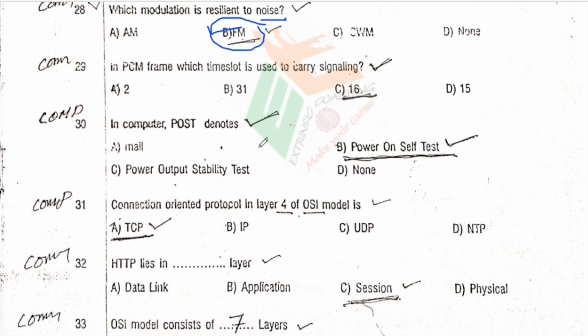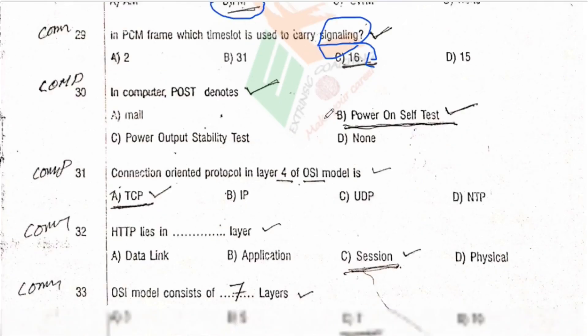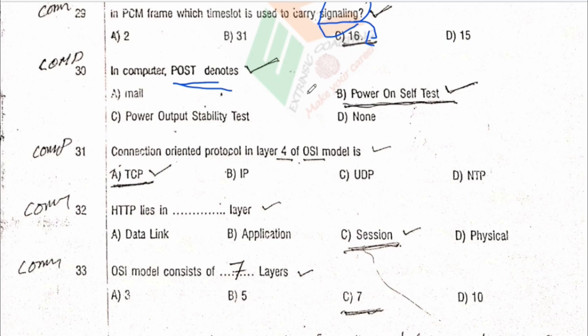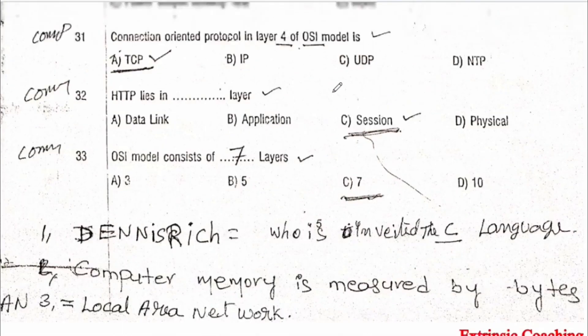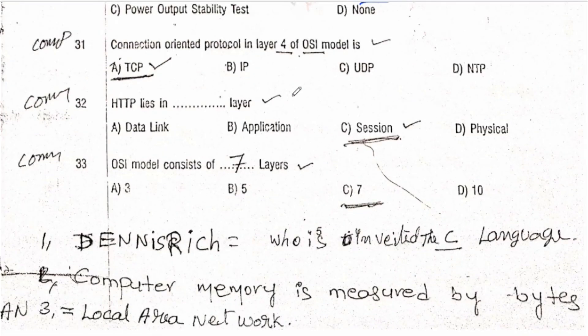In a PCM frame, time slot 16 is used to carry signaling — this is a repeatedly asked question, and option C is the correct answer. In a computer, POST stands for Power On Self Test — option B is the correct answer. POST is an operation initiated by a computer after it is turned on but before it boots the operating system.